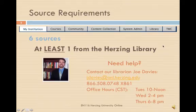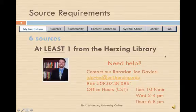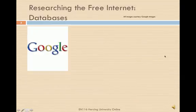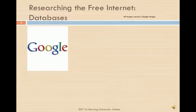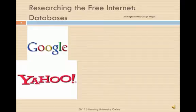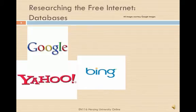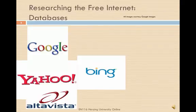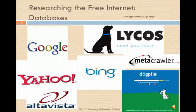Most of us start in the same place when we research on the free internet: Google. Google is the most used search engine on the internet, and it's so popular its name has even become a verb. Other general search engines include Yahoo, Bing, AltaVista, Lycos, Metacrawler, and Dogpile. It's a good idea to use more than one of these to search your topic, because you might get different results depending on where you search.